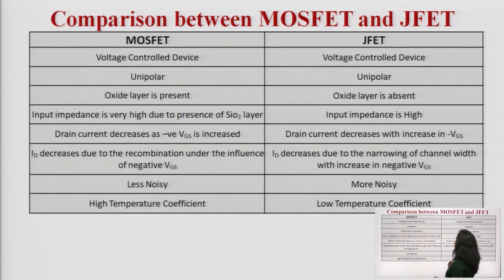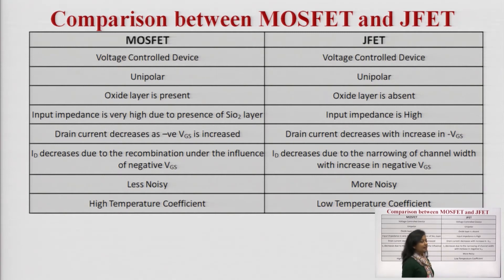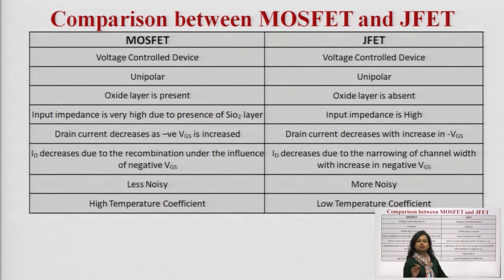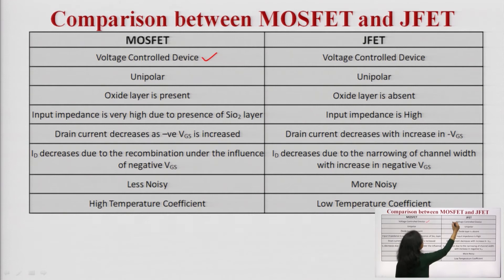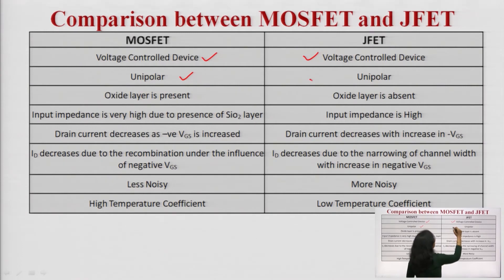Now, comparison between MOSFET and JFET. Regarding MOSFET vs BJT: BJT is a current-controlled device while MOSFET is a voltage-controlled device. BJT is bipolar — B denotes bipolar — where the charge carriers are both electrons and holes. In the case of MOSFET, it is unipolar; majority charge carriers will be the carriers, either electrons or holes. Comparing MOSFET with JFET: MOSFET is a voltage-controlled device, JFET is also a voltage-controlled device. MOSFET is unipolar, JFET is also unipolar.